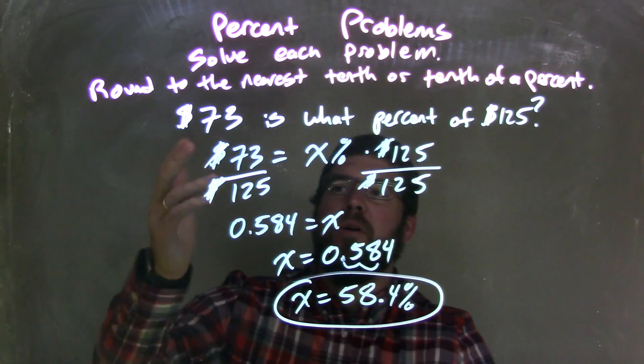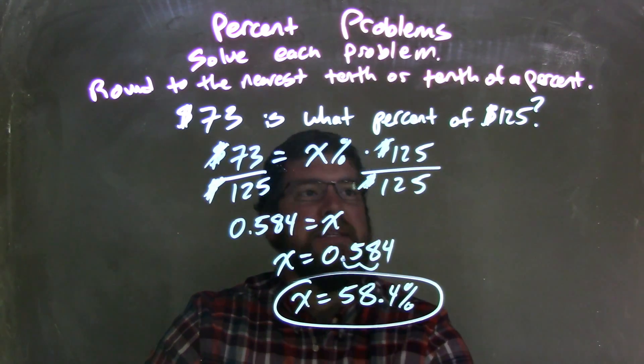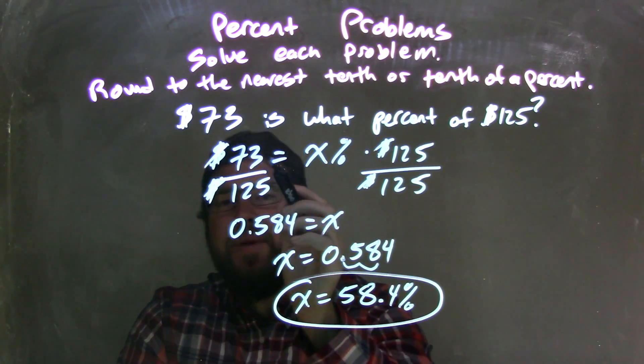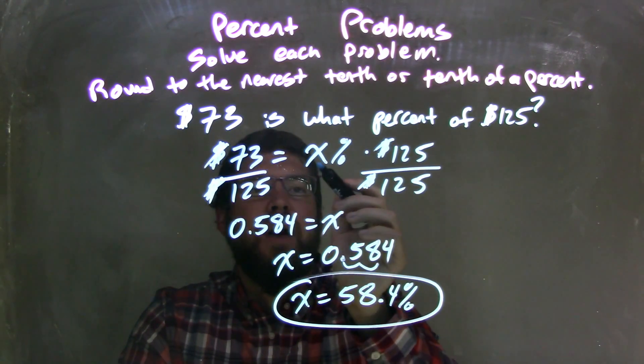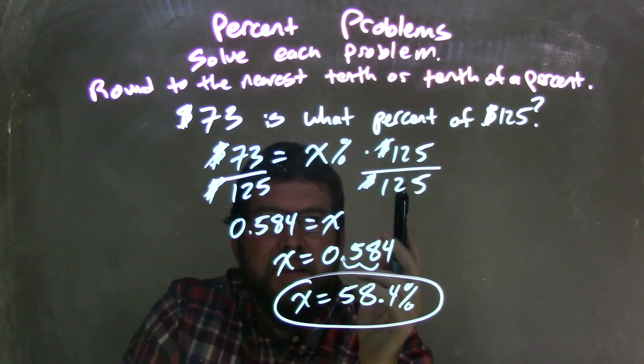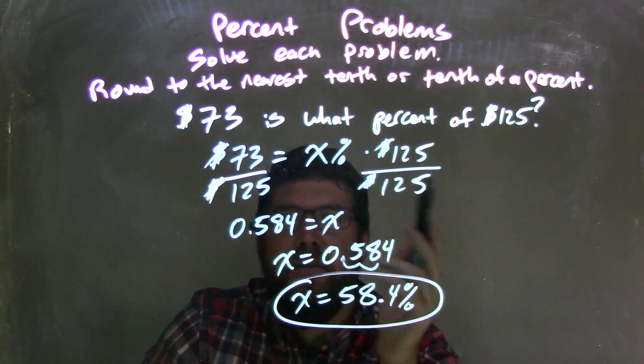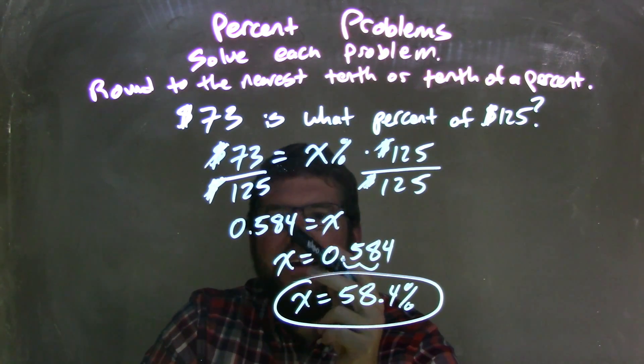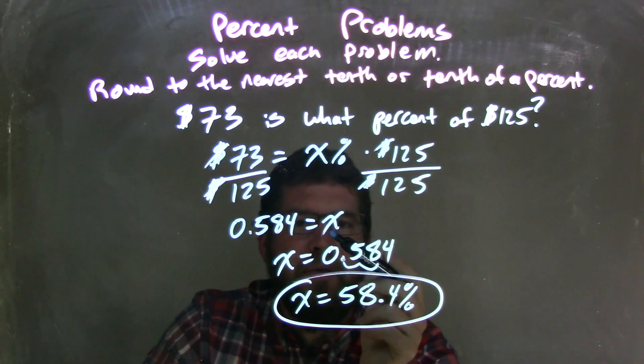Let's recap. We're given the question: $73 is what percent of $125? So we wrote that as an equation: $73 equals x percent times $125. I then divided both sides by 125, eliminating the dollar sign and bringing the 125 over to the left. $73 divided by 125 with my calculator was 0.584, and that was equal to x.